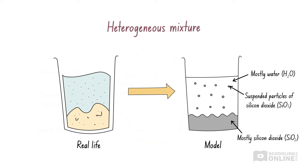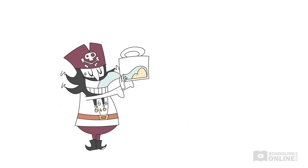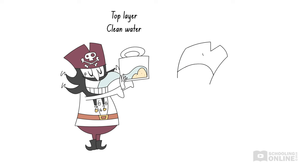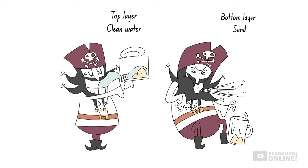The top layer contains water with a few suspended sand particles, which is quite safe for drinking. The bottom layer mainly consists of inedible sand. Therefore, if you were a thirsty pirate, you could drink the top layer of this mixture, but not the bottom layer. Sandy water doesn't taste good. Like all mixtures, the water and sand can be separated by physical means.